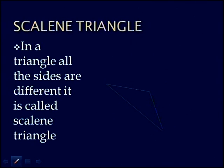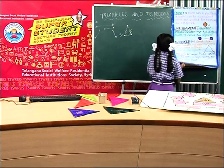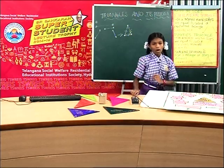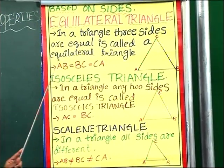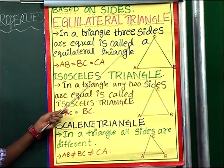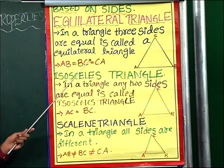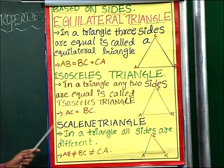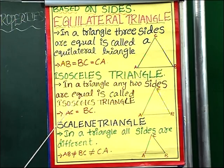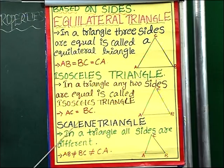Now let us see on the chart. Based on sides: equilateral triangle — all three sides are equal; isosceles triangle — any two sides are equal; scalene triangle — all three sides are different.